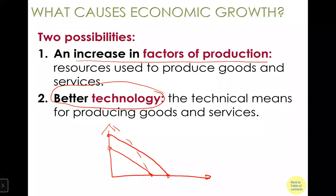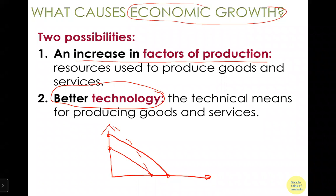So basically, we use the PPF to answer two questions. One is, we use PPF to understand what causes economic growth. Economic growth has two possibilities: either an increase in factors of production — and there are four sources we just learned, including land, labor, physical capital, and human capital. If we have an increase in any of those factors of production, we can expand our PPF, and naturally we are going to experience economic growth, which is measured by producing more goods and services.